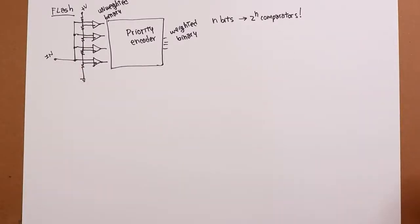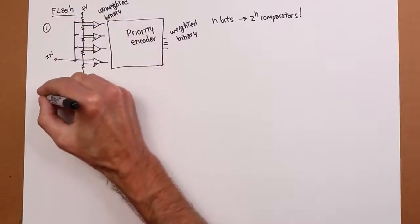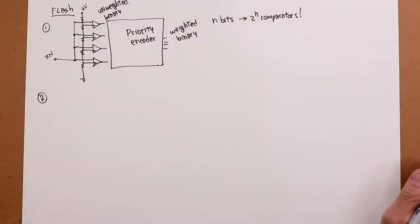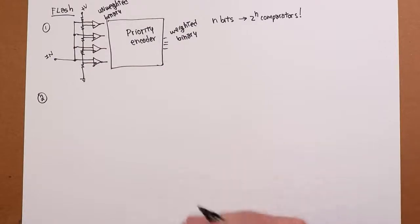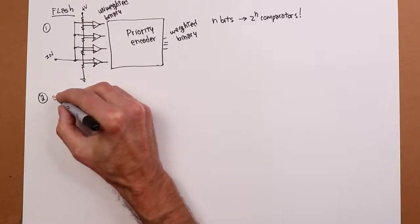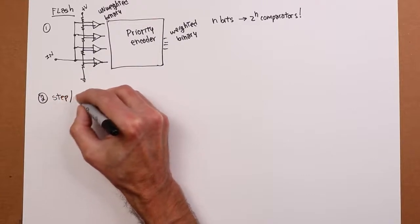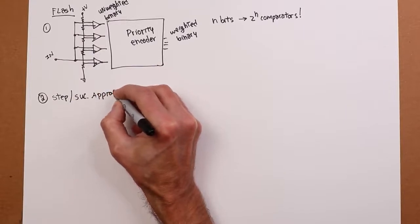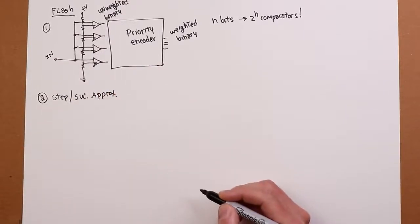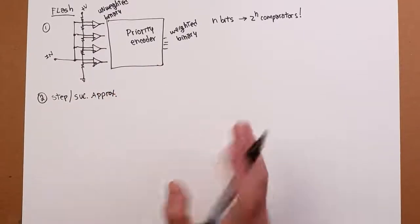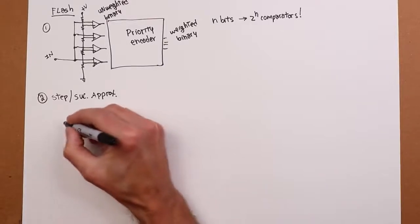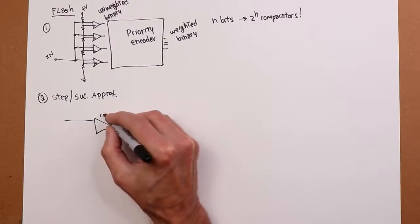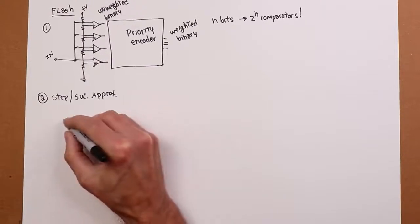The other one, which is not nearly so hardware-intensive, is a step or successive approximation converter. So the way that works, I'm going to do this in sort of two variations. We're still going to have a comparator, but we only have one. Here's my input signal.